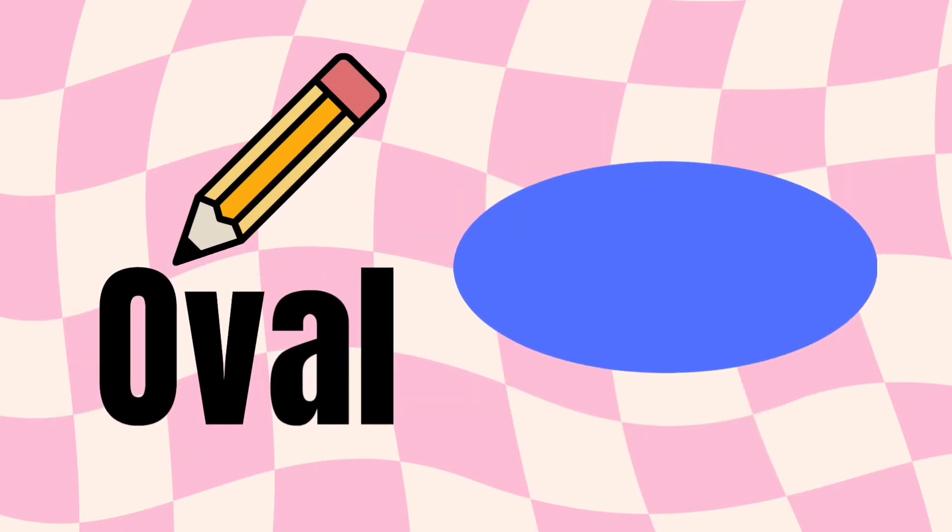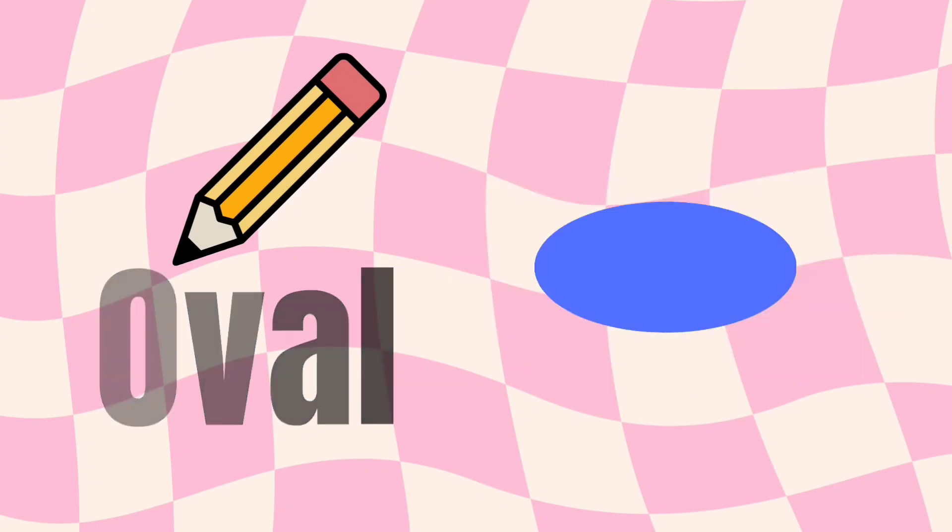Oval. Oval is shaped like an egg. O-V-A-L. Oval. Oval also has no corners.